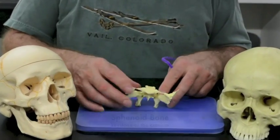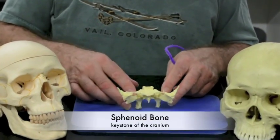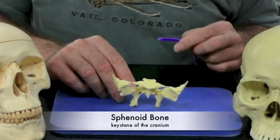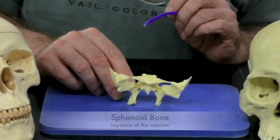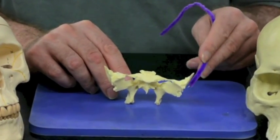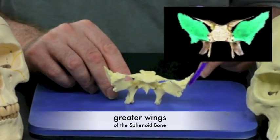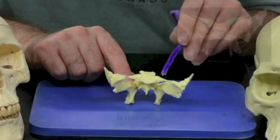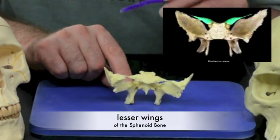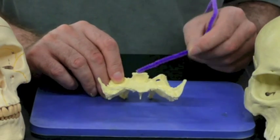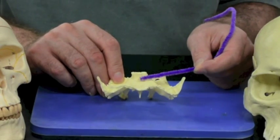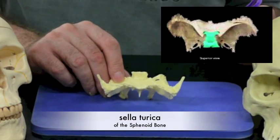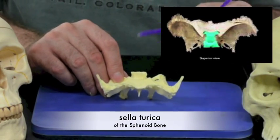Then last of all, we have the sphenoid bone. The sphenoid bone is called the keystone of the cranium, because every other cranial bone articulates with the sphenoid bone. We have the greater wings here and here, and we have the lesser wings here and here. We also have this depression, which is called the sella turcica, which is where the pituitary gland sits.